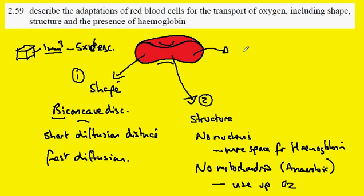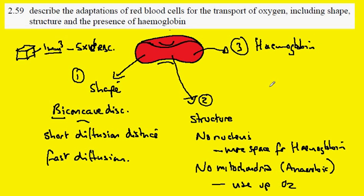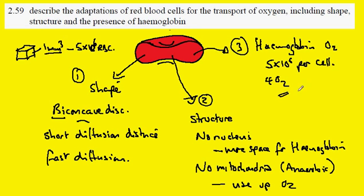The third part is the presence of hemoglobin. Hemoglobin is able to carry oxygen, and there are millions of hemoglobin molecules in each cell — possibly five times ten to the six per cell, with each one carrying four oxygen molecules.